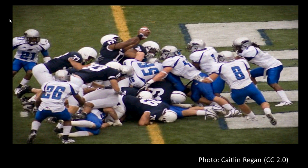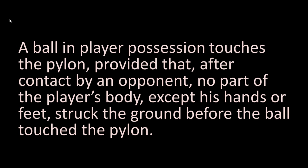It is also a touchdown when the ball hits the pylon. It is a touchdown when a player in possession of the ball touches the pylon, provided that after contact by an opponent, no part of the player's body except his hands or feet struck the ground before the ball touched the pylon. If the runner is down before the ball reaches the pylon, it would not be a touchdown. Also, part of a player's body can be out of bounds before the ball touches the pylon and it will still be a touchdown, as long as that part of the body does not touch the ground out of bounds.